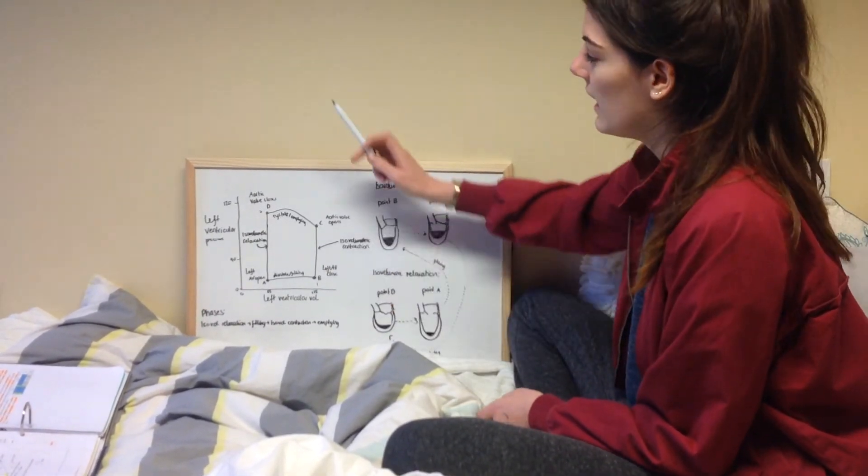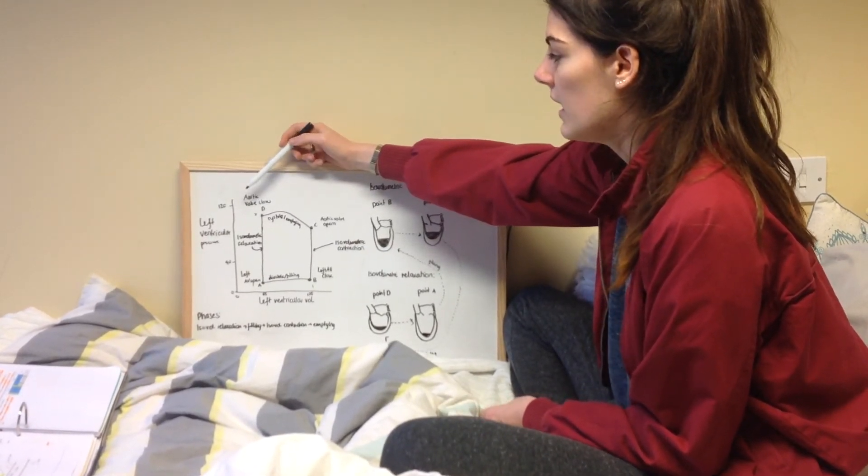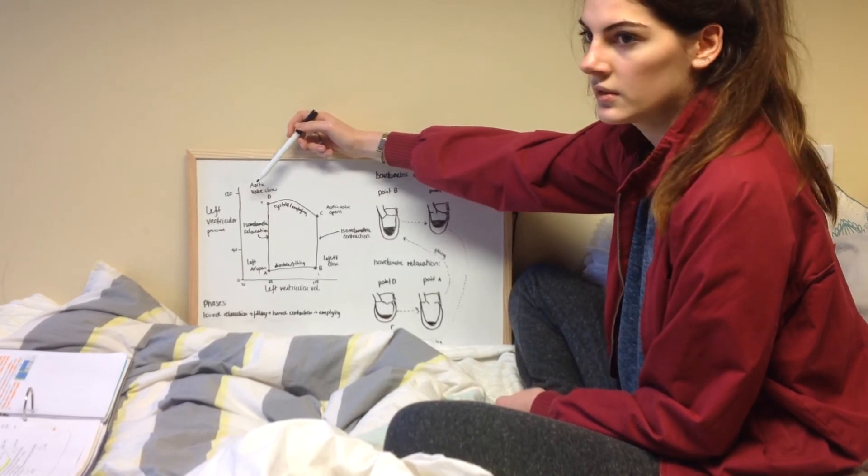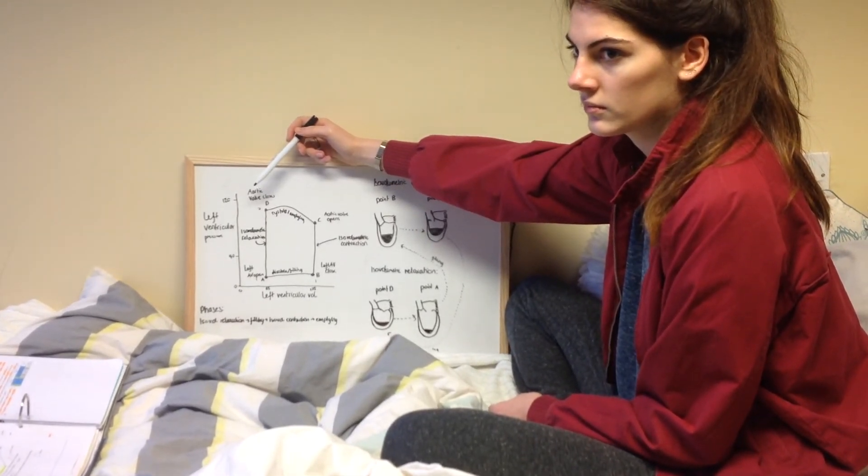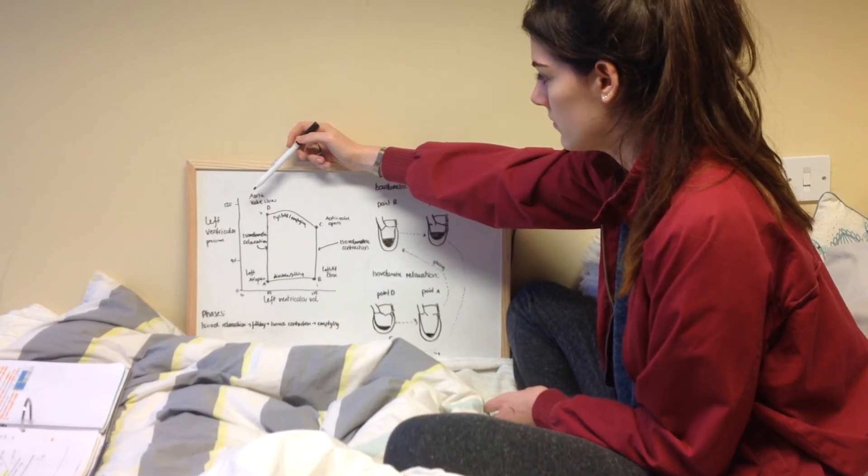S2 will be at the beginning of isovolumetric relaxation, as that occurs when the aortic valve closes.